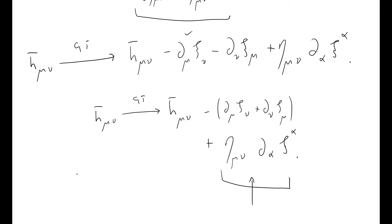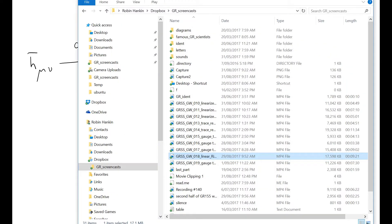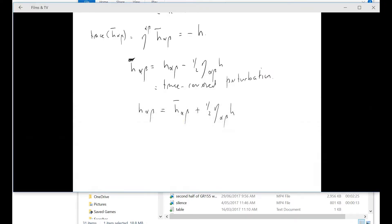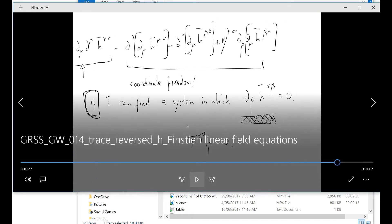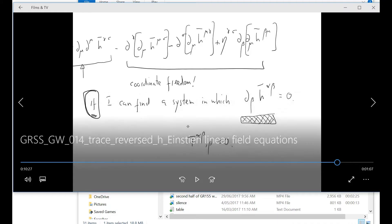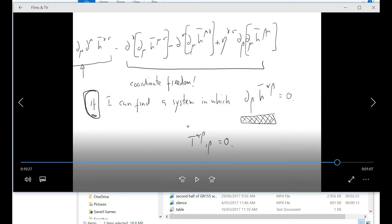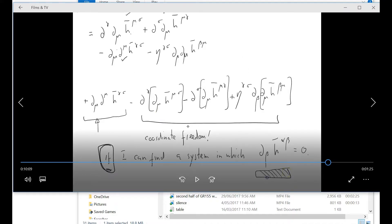Why did we want to fool around with the gauge transformations? Well, in screencast number 14, what we wanted to do was to find a coordinate system in which this condition here — ∂^β h̄_αβ = 0 — held, because if it was zero, that made the linearised Einstein field equations so much simpler. You'll remember that we had a whole bunch of simplifications in screencast 14, which resulted in this term here that we wanted to keep, and these three terms which were just getting in the way and making life difficult.